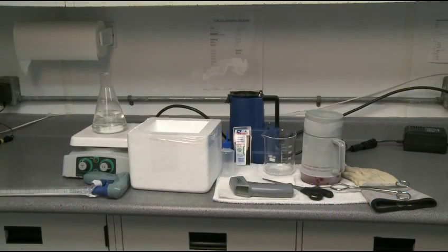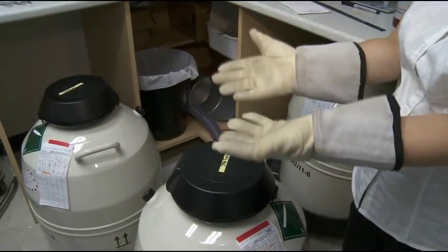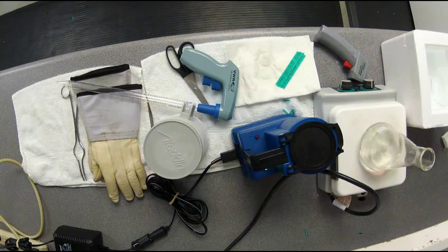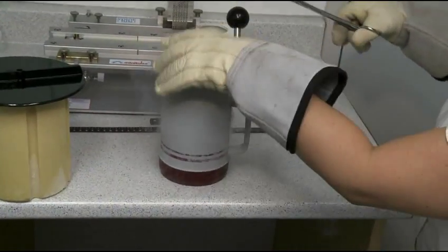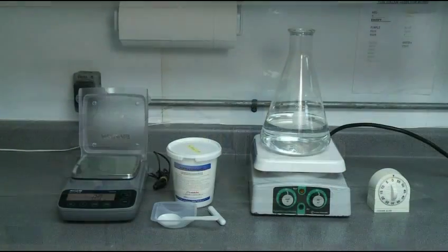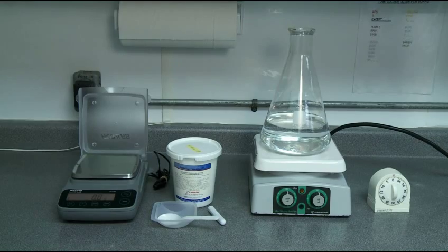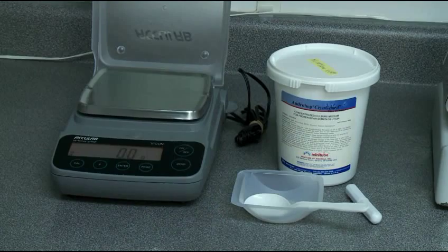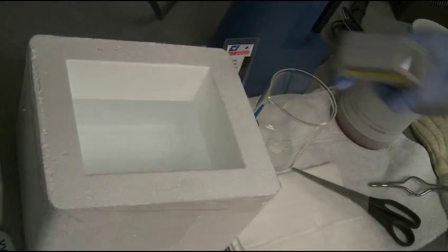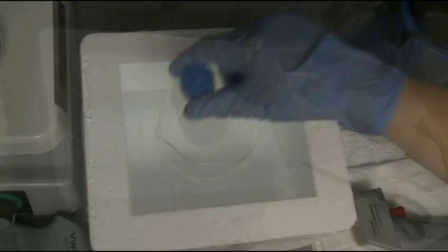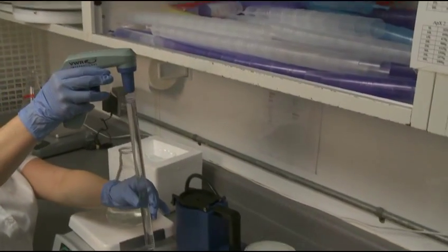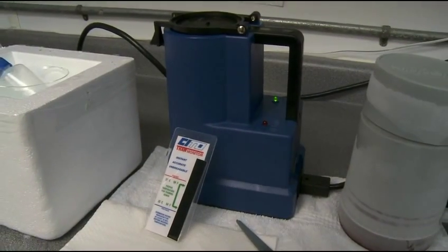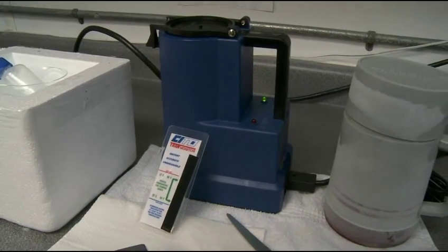Before you begin, make sure you have the following equipment available: protective gloves, forceps, transfer container, distilled water, extender cryo guard thaw, flask, scale, plastic tray, scoop, water bath, thermometer, semen bottles, pipette, beaker, scissors, CETO thaw unit and liquid nitrogen.